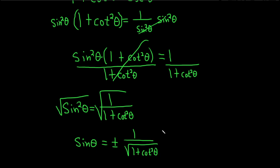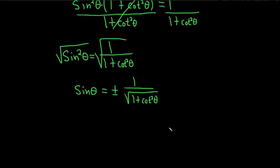We could rationalize here, which is common in trig, so let's do it. We multiply by √(1 + cot²θ)/√(1 + cot²θ), just multiplying by 1, to eliminate the square root in the denominator. So we have sin θ equals